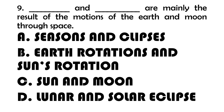Number 9. Blank and blank are mainly the results of the motions of the Earth and moon through space. A. Seasons and eclipses. B. Earth's rotation and the sun's rotation. C. Sun and moon. D. Lunar and solar eclipse.